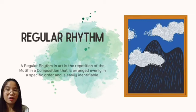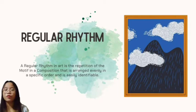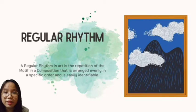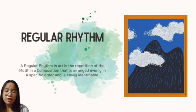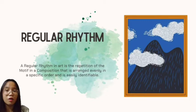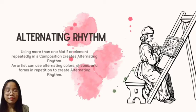What is regular rhythm? A regular rhythm in art is the repetition of a motif in a composition that is arranged evenly in a specific order and is easily identifiable. A regular rhythm in the physical world is the tick-tock of a clock that keeps repeating. You can create horizontal lines at equal intervals with the same color, intensity, and texture and it is a regular rhythm. The advantage of regular rhythm is that it is plain, simple, and easy to create. The rhythm is predictable and consistent and gives a calmness to the art.